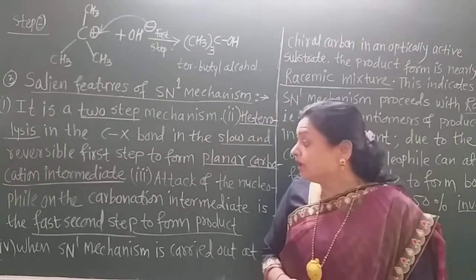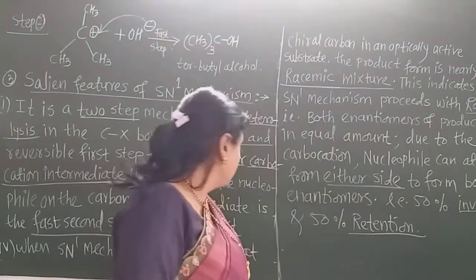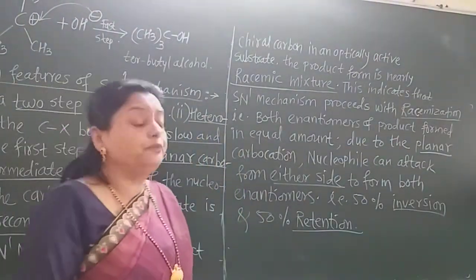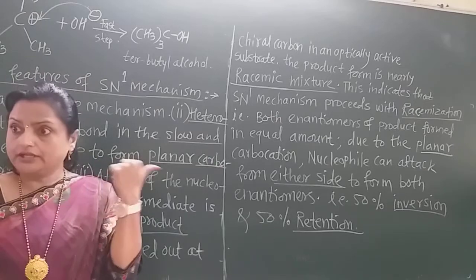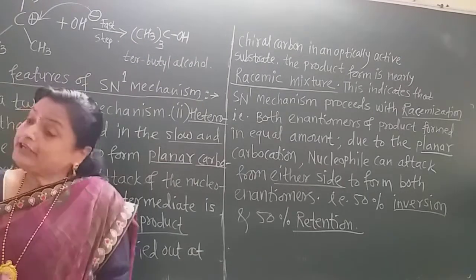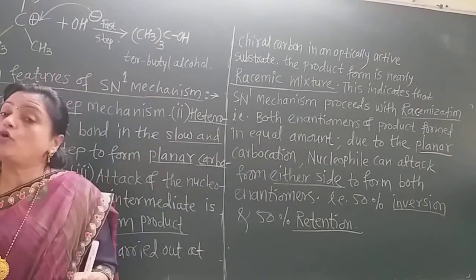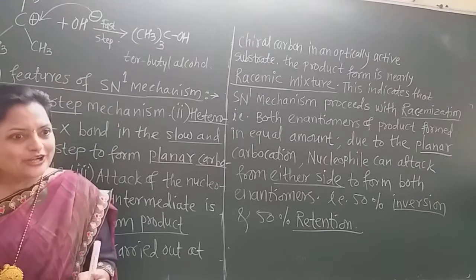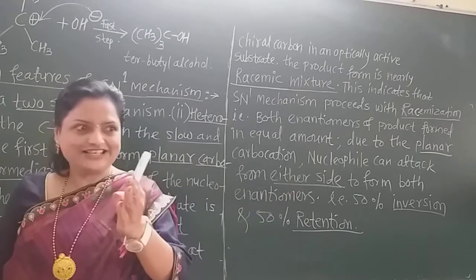When the SN1 mechanism is carried out at a chiral carbon — in tertiary butyl the three methyl groups are similar so it's not chiral — but if this mechanism is carried out at a chiral carbon where there is an optically active substrate, then there is the formation of a racemic mixture. Racemic mixture means 50% of molecules rotate plane polarized light to the right (clockwise) and 50% rotate it to the left (anticlockwise).